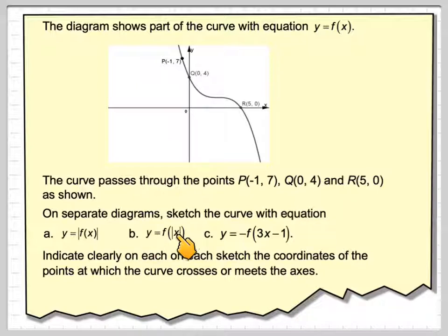On separate diagrams, sketch the curve with equation y equals the absolute value of f of x, y equals f of the absolute value of x, and y equals minus f of 3x minus 1. Indicate clearly on each sketch the coordinates of the points at which the curve crosses or meets the axes.